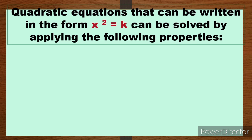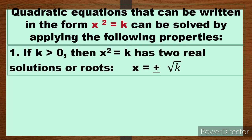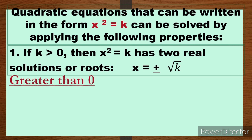Quadratic equations that can be written in the form x² = k can be solved by applying the following properties. We have three properties. The first one: if k is greater than 0, then x² = k has two real solutions or roots. When k is greater than 0, there will be two solutions or roots, and that is x = ±√k.